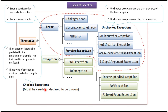Checked exceptions must be caught or declared to be thrown. Examples of checked exceptions are AWT exception, IO exception, interrupted IO exception, end of file exception, and file not found exception. The checked exceptions can be predicted by the programmer, and checked exceptions must be checked at compile time.